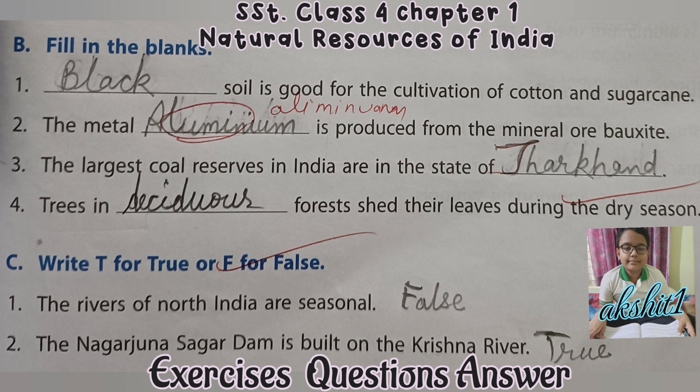Fill in the blanks. First, black soil is good for the cultivation of cotton and sugarcane. Second, the metal aluminium is produced from the mineral bauxite. Third, the largest coal reserves in India are in the state of Jharkhand. Fourth, trees in deciduous forests shed their leaves during the dry season.